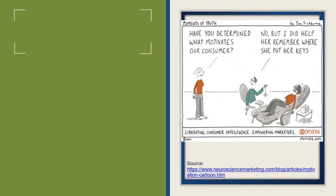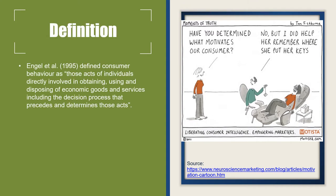Remember the first rule in marketing: you cannot satisfy everybody or every consumer in the market. Therefore, you have to guide them — if not everybody, then at least most of them — towards your product. That is the job of a marketer, and to understand who will be included in this 'most,' we study consumer behavior, as it helps marketers understand consumers better.